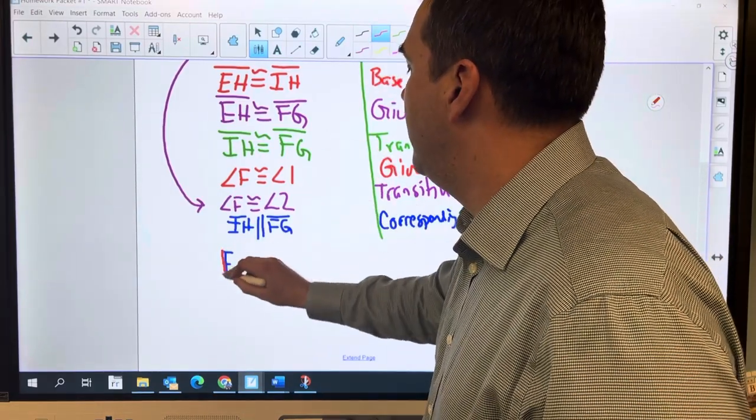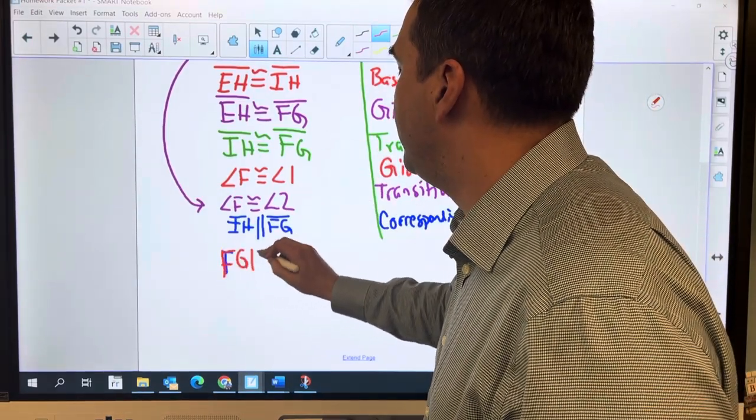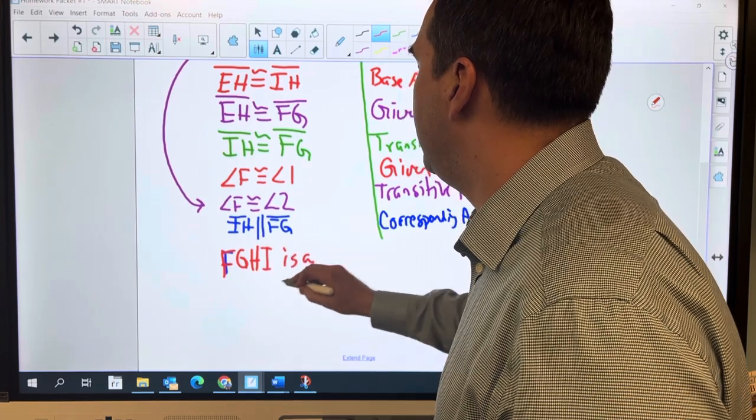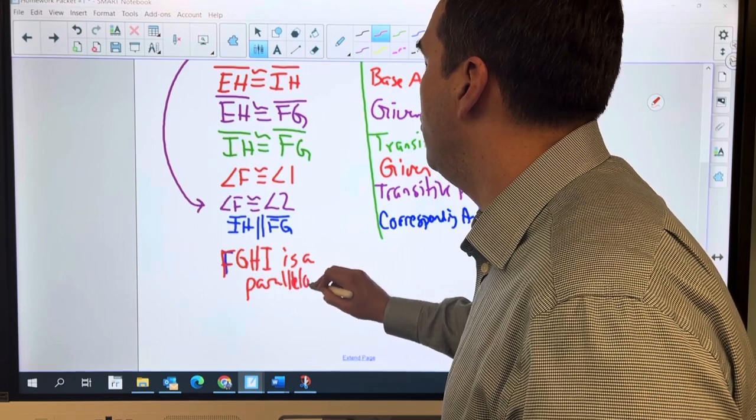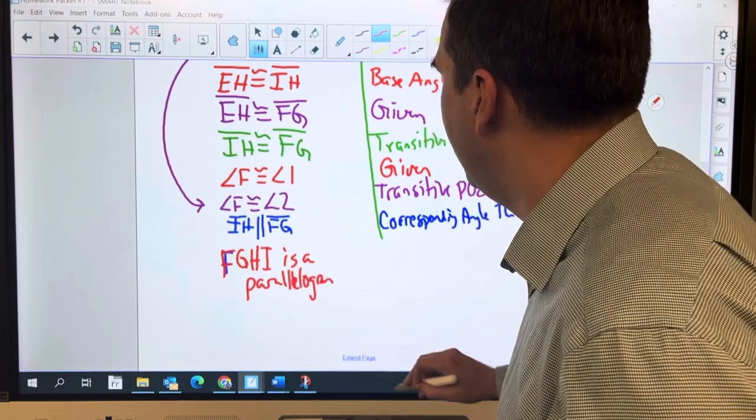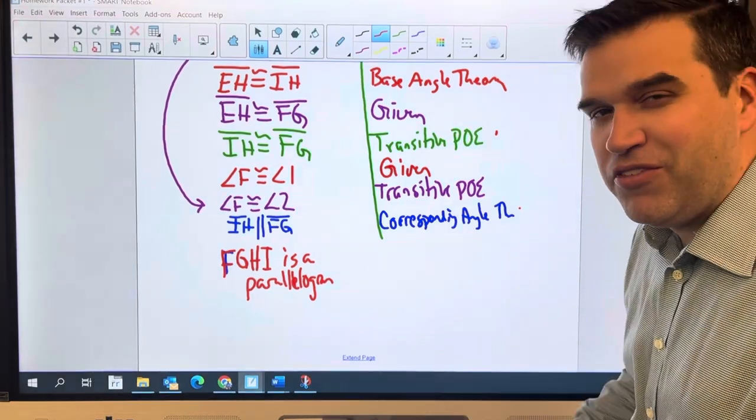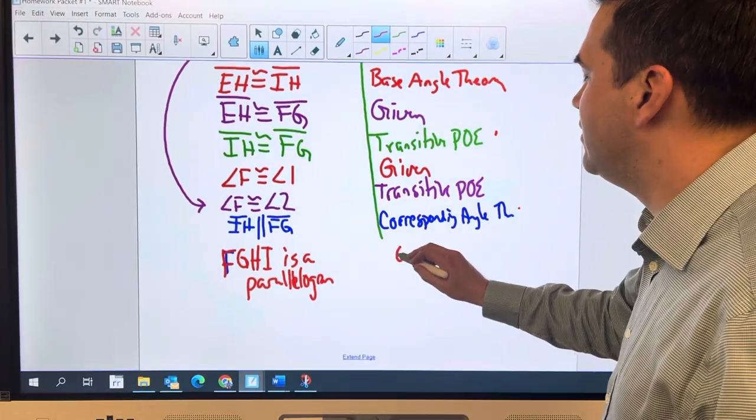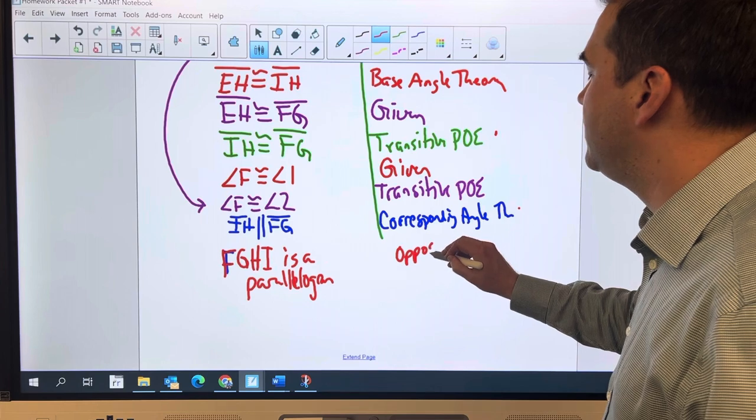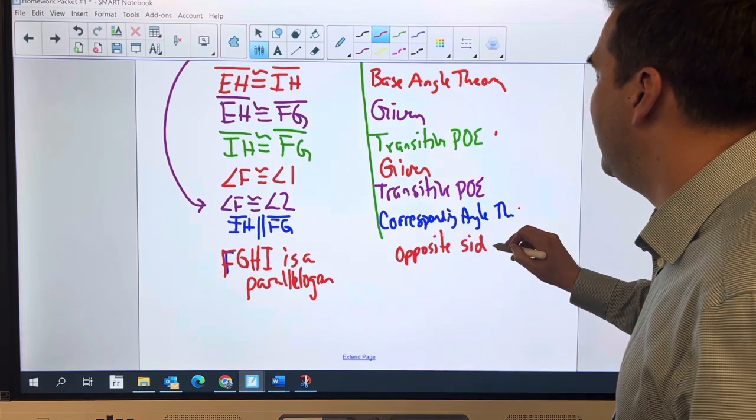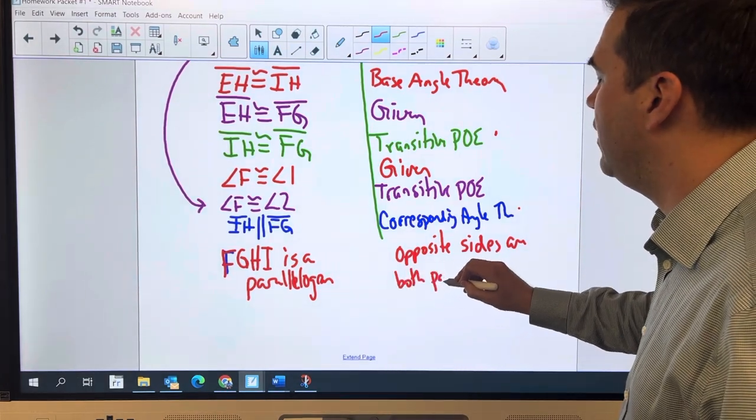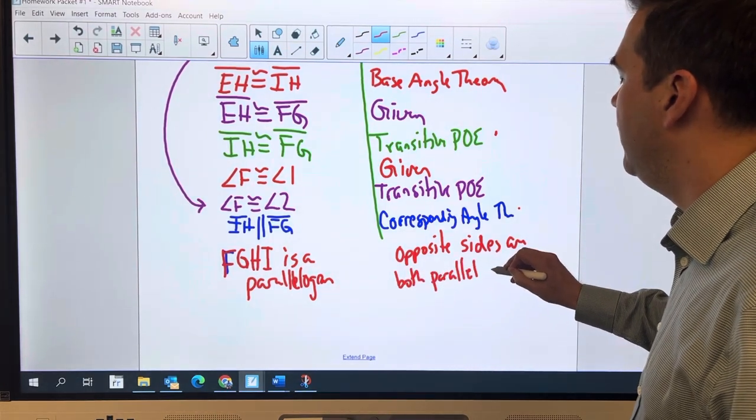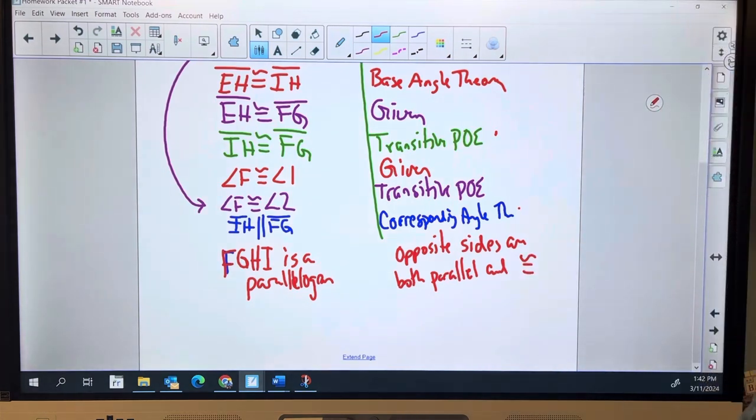FGHI is a parallelogram. And we want an abbreviation, we want a shortcut here, but really it's just opposite sides are both parallel. All right.